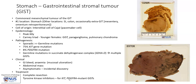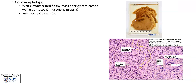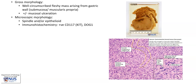In KIT or PDGFRA mutant GISTs, tyrosine kinase inhibitors can also be very effective. Grossly, as we saw, they are usually well-circumscribed and fleshy, and they do not arise in the mucosa but deep to the mucosa. There may be overlying mucosal ulceration.